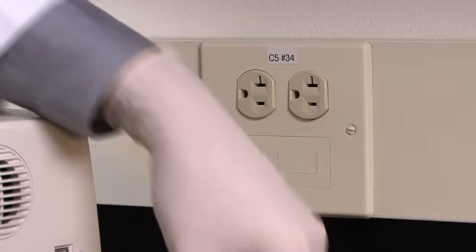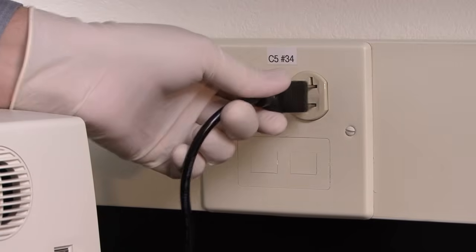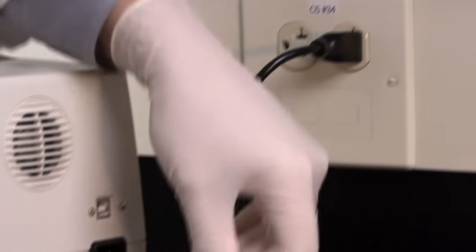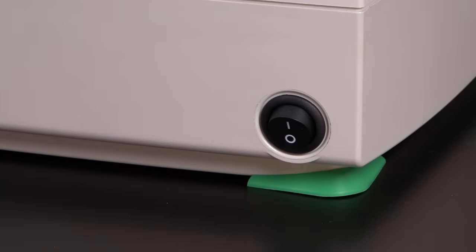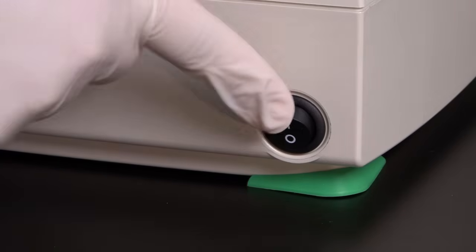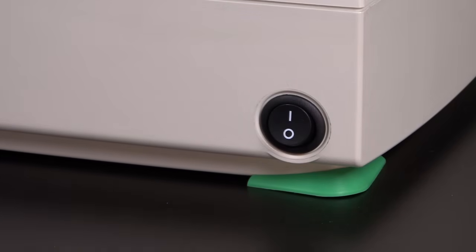In order to set up the transblot turbo, simply plug in the power cord included with the system to the rear of the unit. The power supply is compatible with universal line voltage. Turn on the power switch located at the side of the unit and you are now ready to assemble a transfer sandwich.